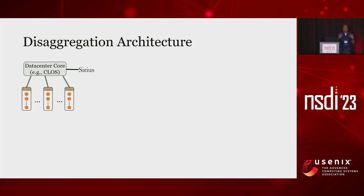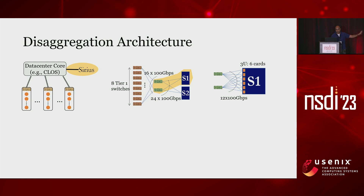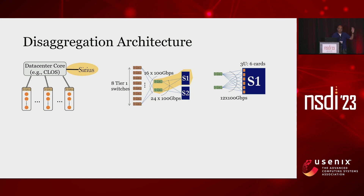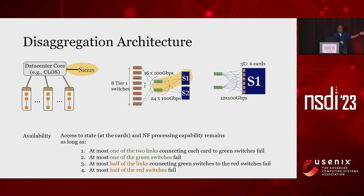Let's step back and look at the connection architecture. The graph in the middle opens up the highlighted one on the left, and I'm going to look at one of those appliances. In today's network in Azure, each Sirius appliance is a 3U server with six DPUs in it. Our minimum unit of deployment is a pair of these servers connected as shown. The key idea is that there's enough redundancy — you have access to the state in the card and the NF processing capability in spite of a large number of potential failures, including links or switches dying.